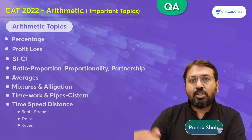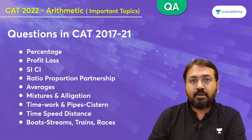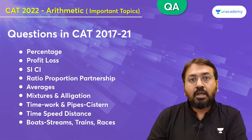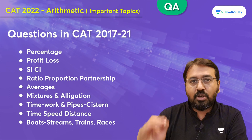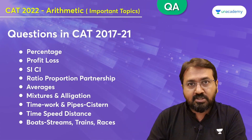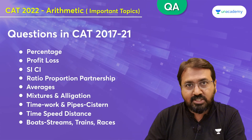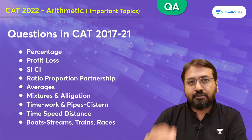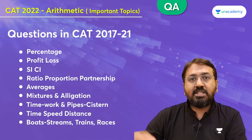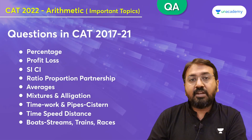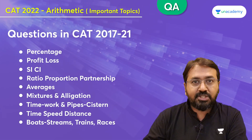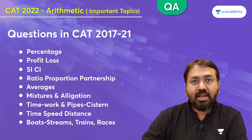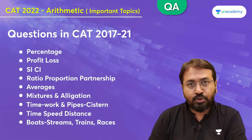As you can see on your screen, I have shown the important topics from the CAT exam perspective. If I look at CAT 2017 to 2021 papers of various slots, we will find that questions have been asked from each of these areas. In fact, there have been some slots or years in which two or three questions have been asked from a particular topic — for example, time speed distance, averages, or even percentage.